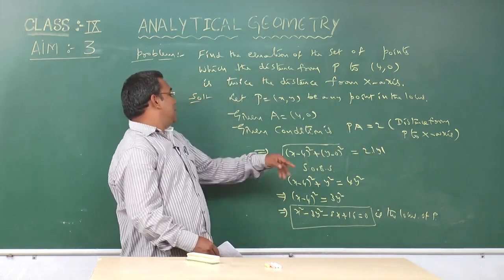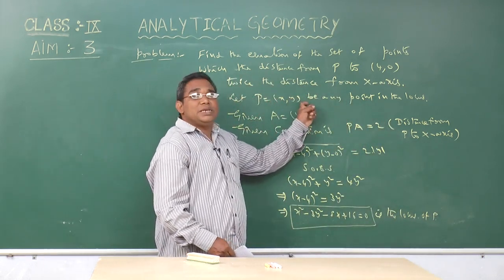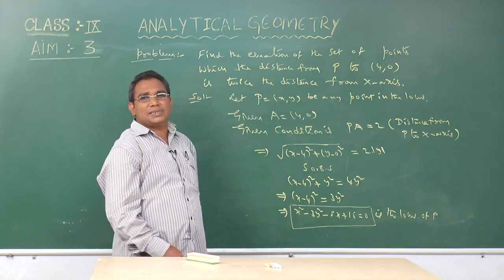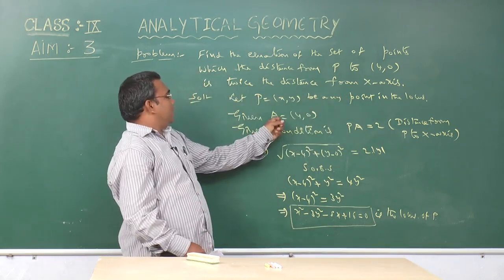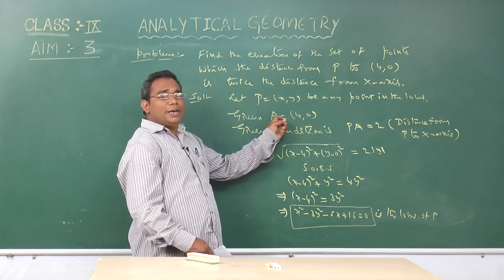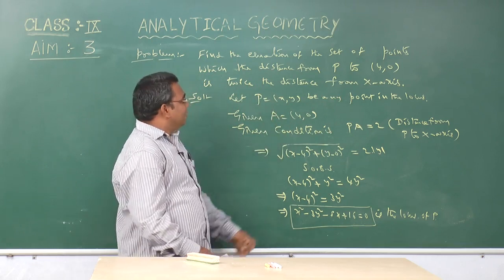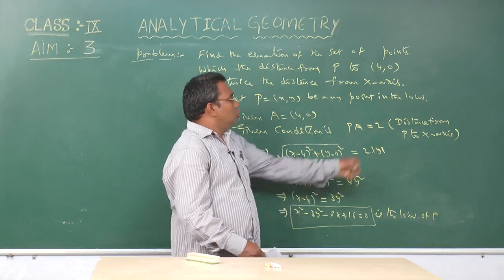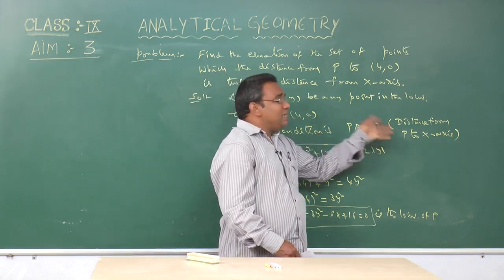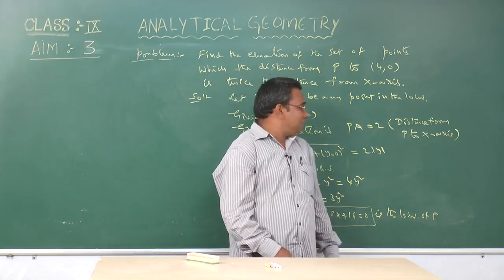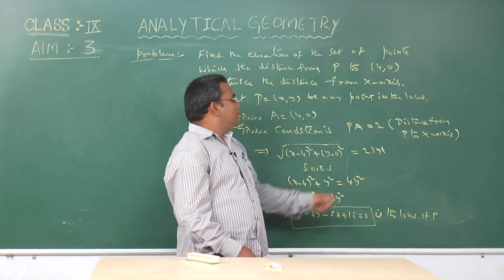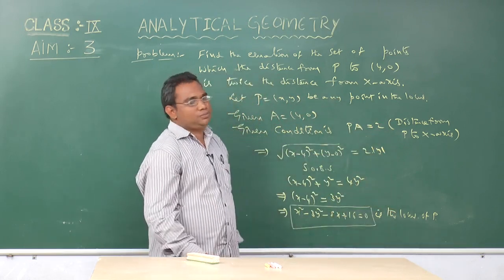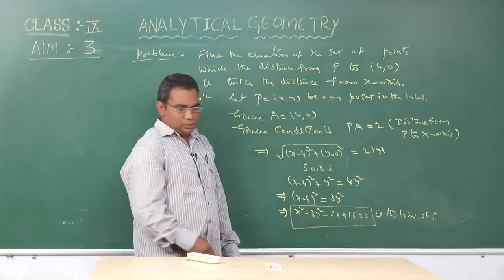Once again, let P be any point in the locus, that is P equal to (x, y), and the given point can be taken as A. The given condition is PA equals twice the distance from P to the x-axis, that means 2 times mod y. PA equal to 2 mod y is the given condition.